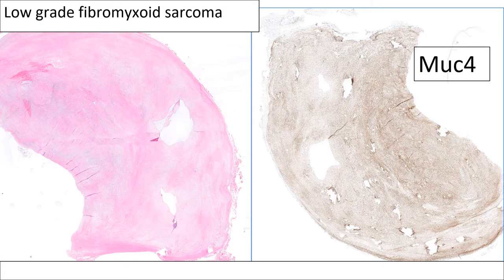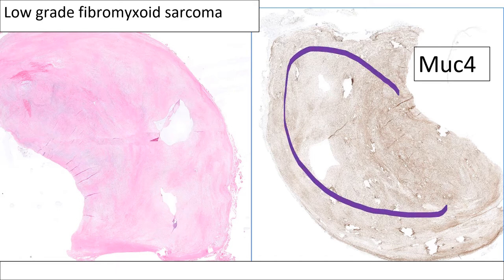This is one of those tumors defined by the presence of a genetic alteration. Nevertheless, if you do not have access to a molecular lab or FISH, no worries at all. The overwhelming majority of these tumors are diffusely and strongly positive for MUC4, as shown here, and the mimics of low-grade fibromyxoid sarcoma are typically negative. This is an excellent stain for the diagnosis of this relatively low-grade sarcoma.